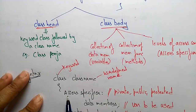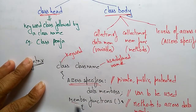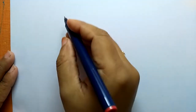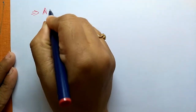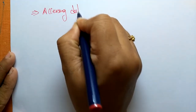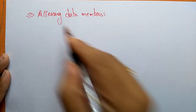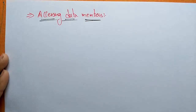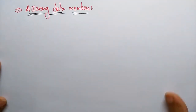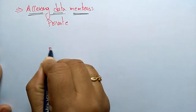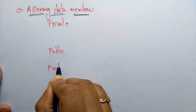Now let us see one by one: what are the access specifiers, what are the member functions, and what are the data members. Coming to accessing data members — if you want to access the data members you need to specify the access specifiers, which may be private, public, or protected.